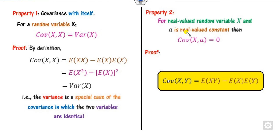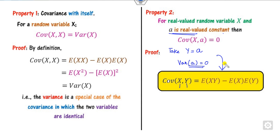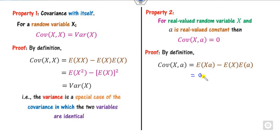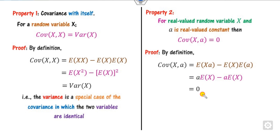Another property: for any real constant a, the covariance when any variable — either x or y — is a constant equals zero. We know the variance of a constant is zero, so similarly the covariance is zero. The proof is simple: substituting y = a, the constant a can be taken outside the expectation, giving a·E[x] minus a·E[x], which equals zero. This holds for both discrete and continuous random variables.